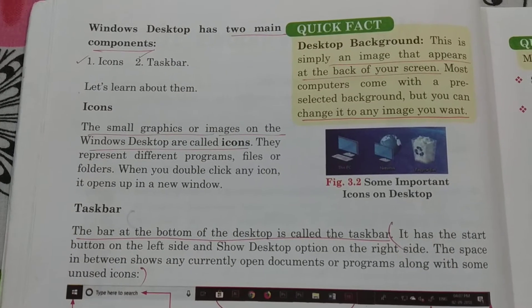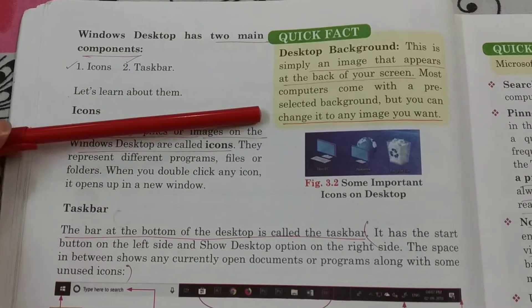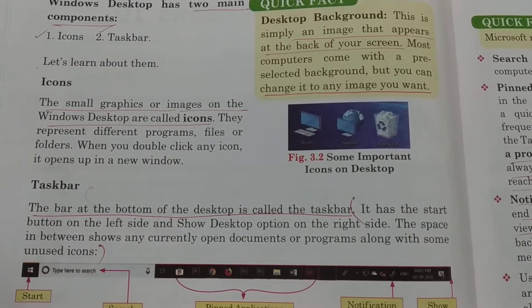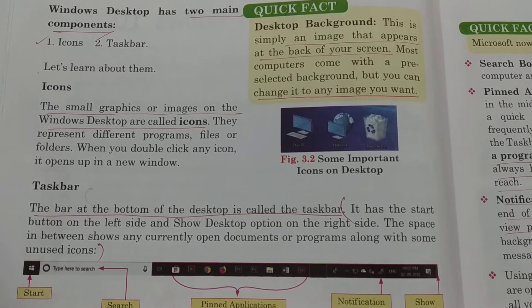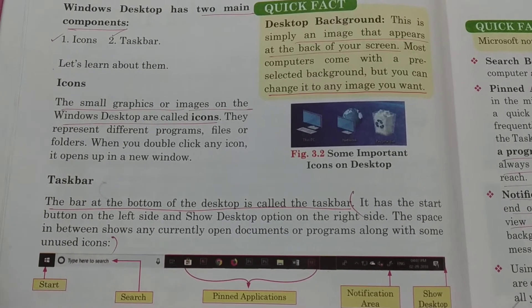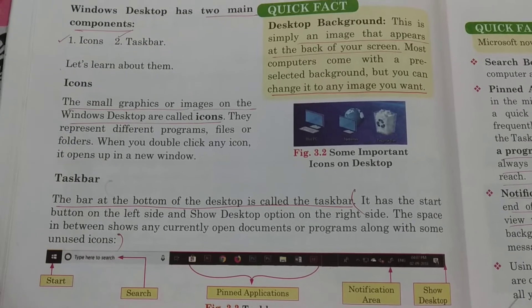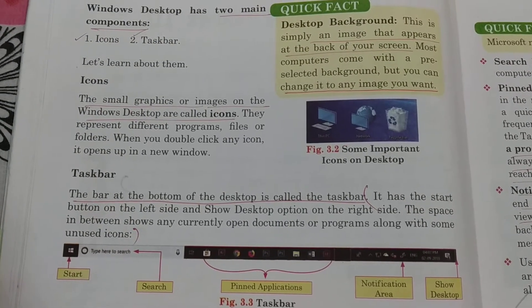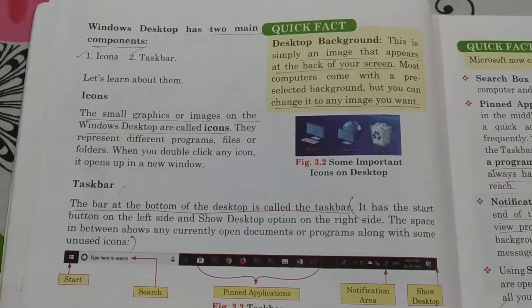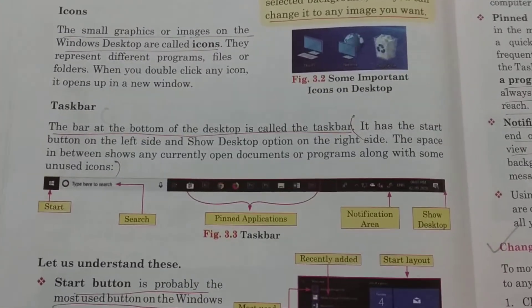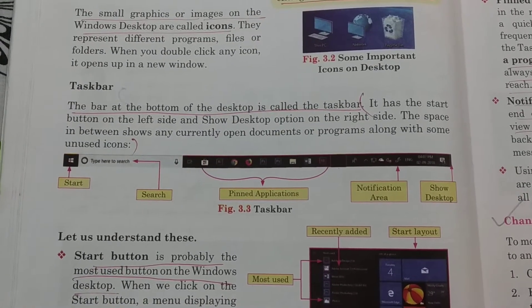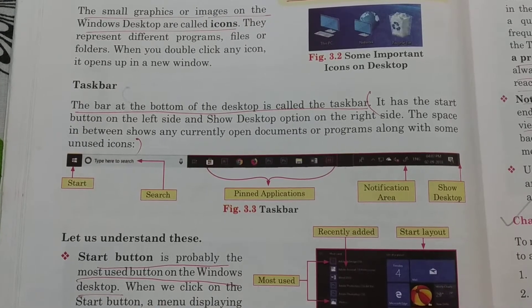The desktop background is the image that appears at the back of our screen. We can change this desktop background again and again according to our choice — so if a true/false states we cannot change the desktop background, the answer is definitely false, because we can change it anytime. The bar at the bottom of the desktop is called the taskbar. In the taskbar there are several things.